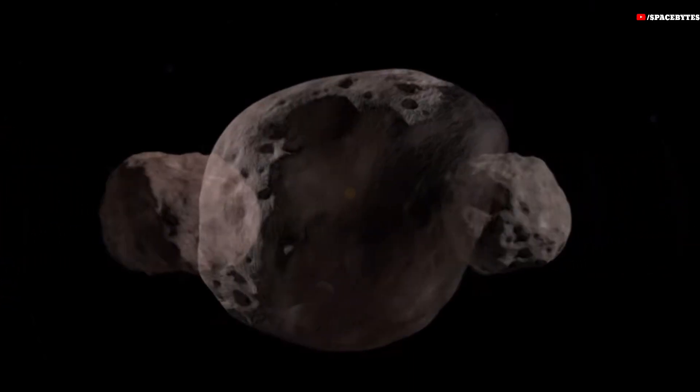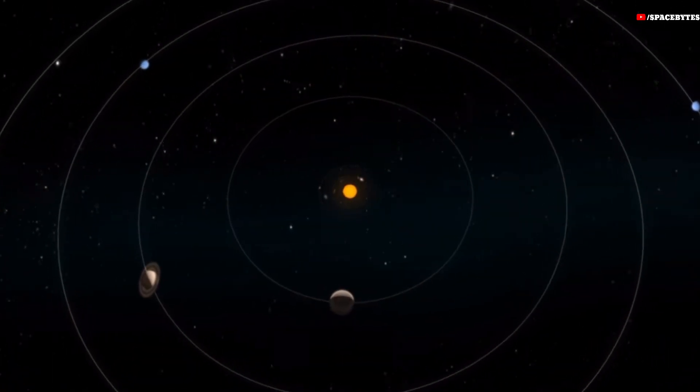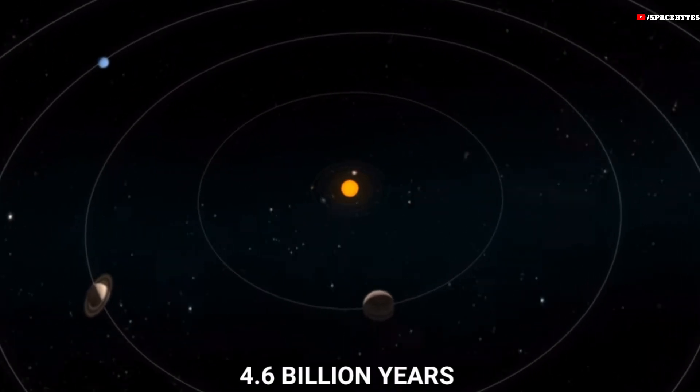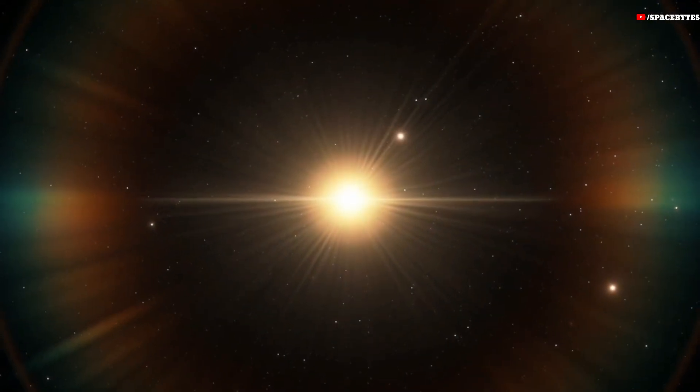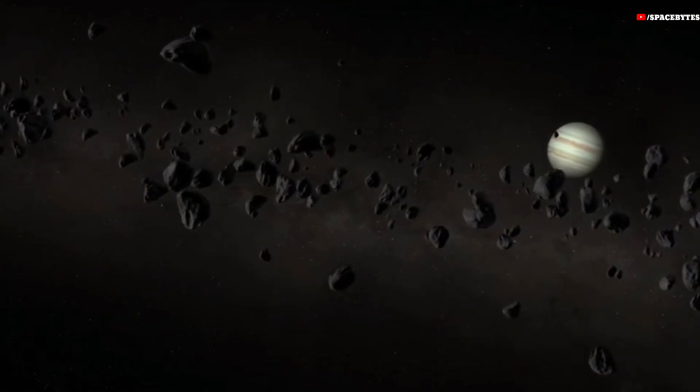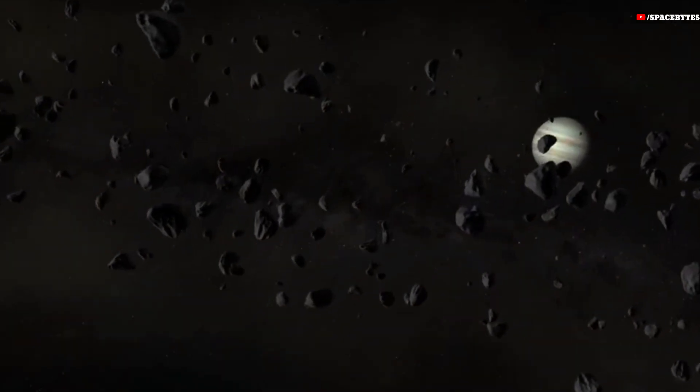Asteroids are ancient space rocks left over from the early formation of our solar system about 4.6 billion years ago. These space rocks orbit the sun and are mainly present in the asteroid belt located between Jupiter and Mars.